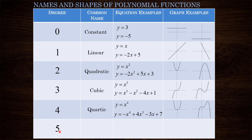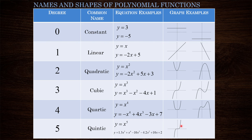Finally, let's talk about degree five polynomial functions, called quintic functions. The most basic is y equals x to the power of five, though you can also have other lower-power terms. The graph of y equals x to the fifth is similar to y equals x cubed, but steeper on the ends and flatter near the origin. A more complex quintic function has a graph with a lot more peaks and valleys, with lots of turning around — and we'll talk more about that in the future.